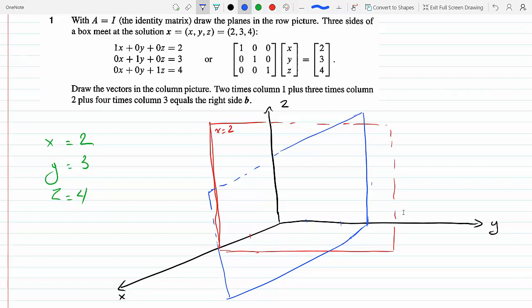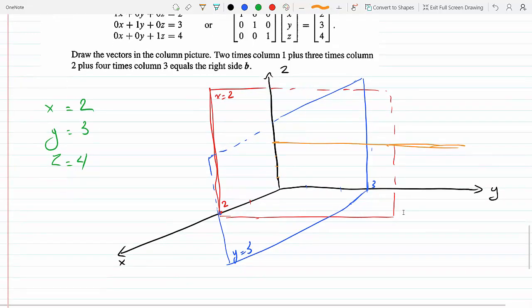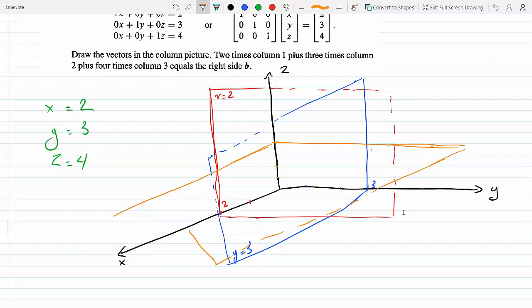The last one is z equals 4. Let's do this in gold. This blue one here is y equals 3, so this is 3, this point here is 2. The last one in gold is z equals 4, so we go up to 4: 1, 2, 3, 4. This is going to be a horizontal plane parallel to the xy plane. So this is z equals 4, and this point here is 4.